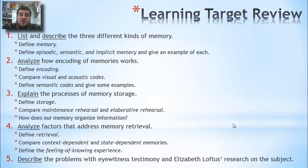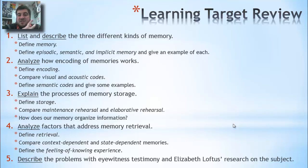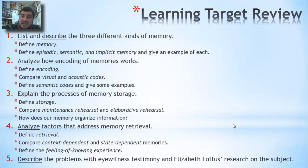To review our learning targets: we talked about the three kinds of memory — episodic, semantic, and implicit — and the first stage of encoding, the second stage of storage, and the third stage of retrieval. We also talked about the problems with eyewitness testimony. Next time we'll get into the stages of memory like sensory, short-term, and long-term. Have a good night, bye.